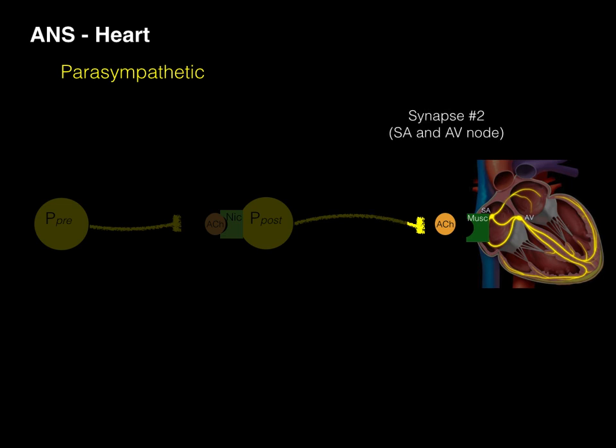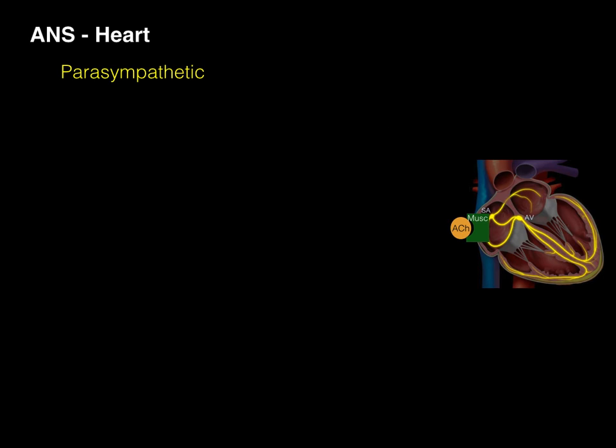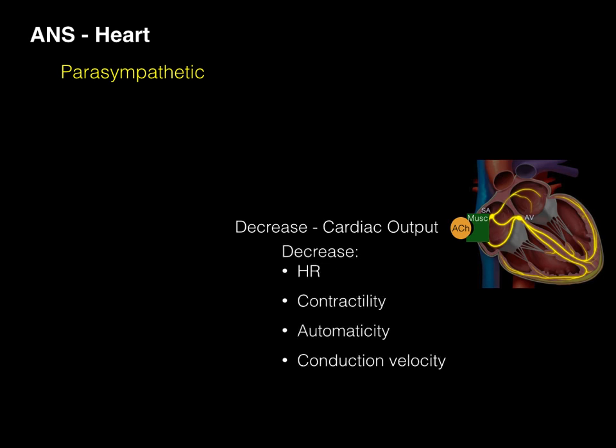Synapse number two is at this SA and AV node as well. This is a different type of cholinergic receptor. Acetylcholine is now going to bind to a muscarinic receptor. When it binds to that muscarinic receptor, it's going to do the antagonistic response to the heart, which is decrease cardiac output by decreasing heart rate, decreasing contractility, decreasing automaticity, and decreasing conduction velocity.